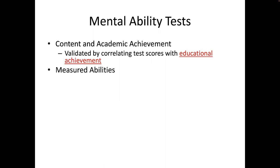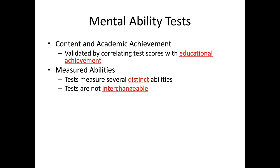Second, ability tests actually measure different underlying abilities. Mental ability tests can measure several distinct abilities, including general reasoning, logical evaluation, spatial orientation, numerical fluency, and verbal comprehension, amongst many others. Of course, what is measured by the test is related to the content of that test. A particular test may not measure all mental abilities — in other words, these tests are not interchangeable because they do not have identical content.